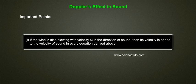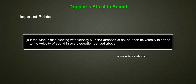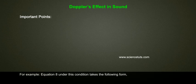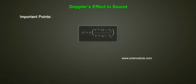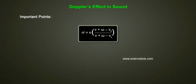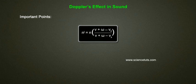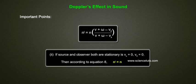Important point 1: If the wind is also blowing with velocity ω in the direction of sound, then its velocity is added to the velocity of sound in every equation derived above. For example, Equation 8 under this condition takes the form: n' = n × (v + ω - v₀) / (v + ω - vs).